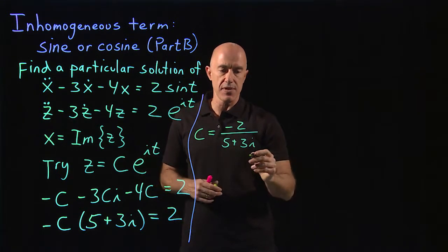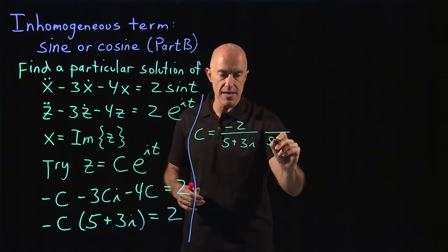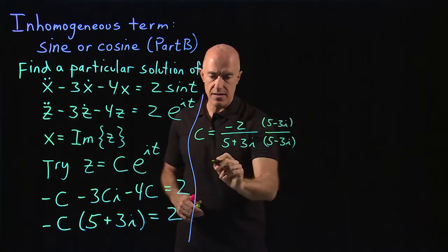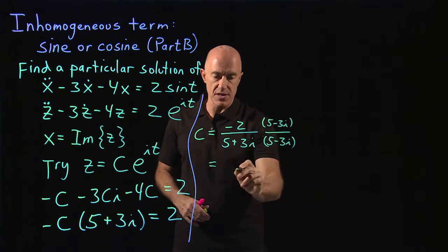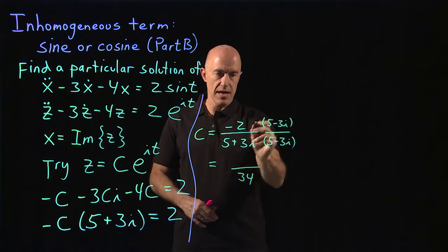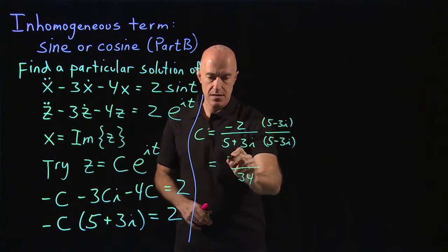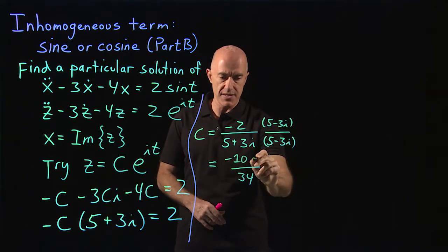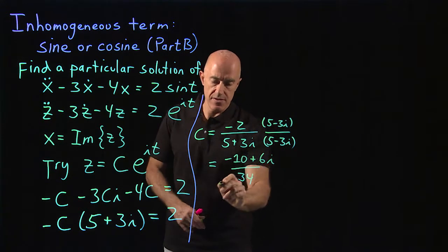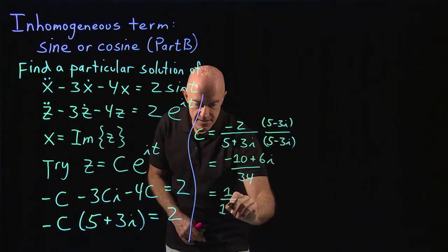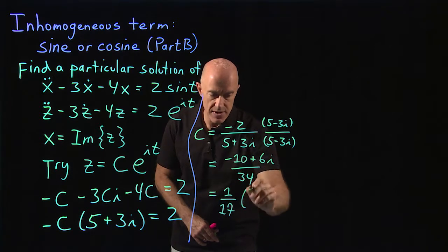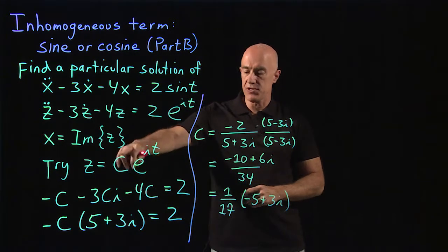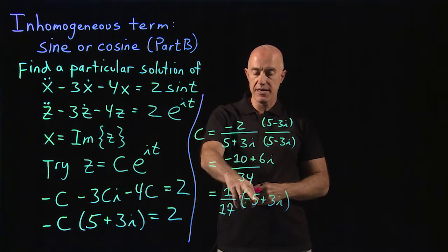And then we can write that as a complex number. If we clear the denominator, we multiply by the complex conjugate of the denominator, 5 minus 3i, 5 minus 3i. And the denominator becomes 25 plus 9, which is 34. And the numerator is minus 10, and then we have minus 2 times minus 3i is plus 6i. And this becomes 1 over 17 if we divide numerator and denominator by 2. And we have minus 5 plus 3i. So that's our complex coefficient c. It's 1 over 17 times minus 5 plus 3i.